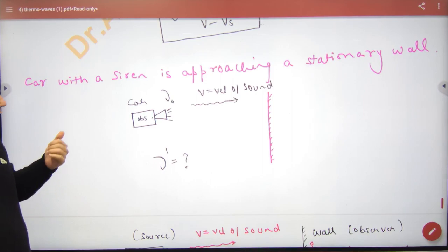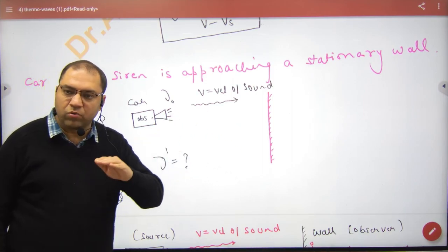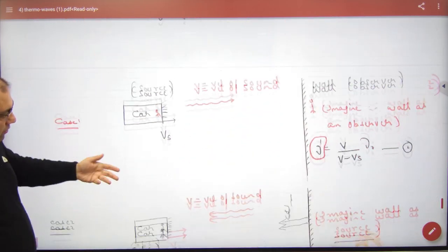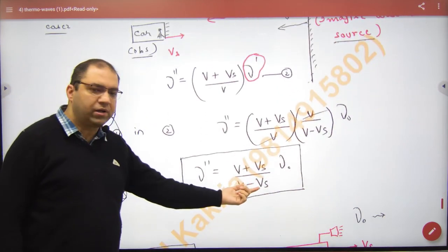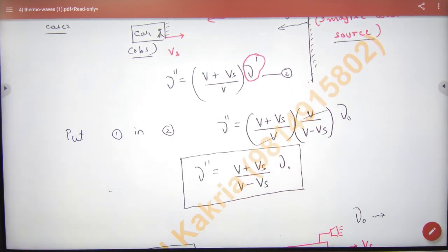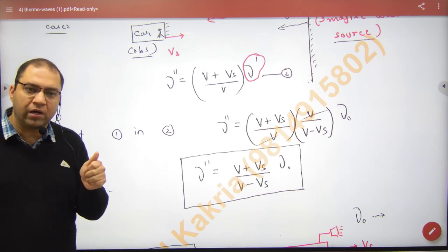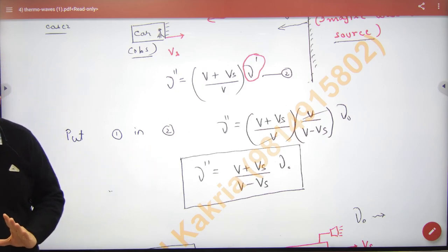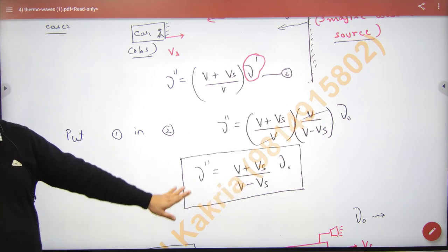This was also covered: if a car is coming and it reflects the sound, in this case I made two cases. You have to use the direct formula for this. The formula also applies to the frequency value of the car's siren.